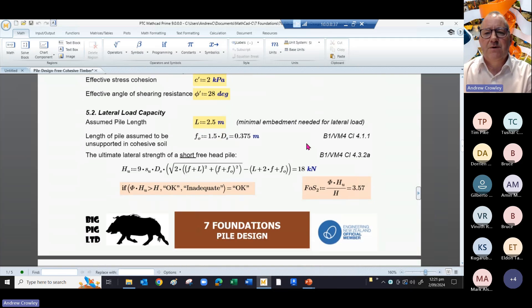From B1/VM4, we can work out what the ultimate lateral strength of the short freehead pile is. So we can start with an assumed length of 2.5, and that gives us a lateral resistance by using that formula of 18 kilonewtons.